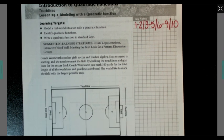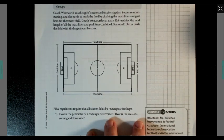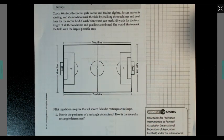Let's start by taking a look at the introduction for questions 1 and 2. Coach Wentworth coaches girls soccer and teaches algebra. Soccer season is starting and she needs to mark the field by chalking the touchlines and goal lines for the soccer field. Coach Wentworth can mark 320 yards for the total length of all the touchlines and goal lines combined.